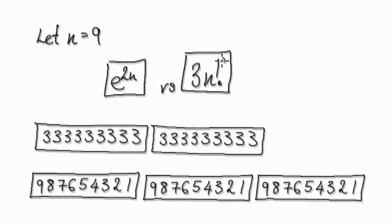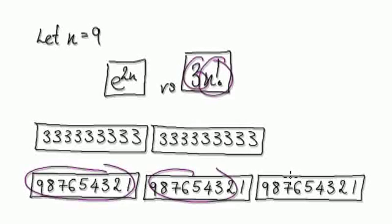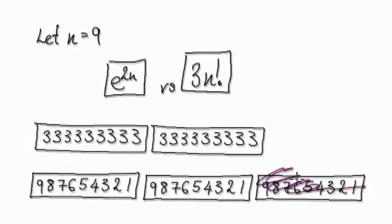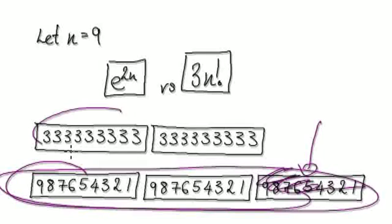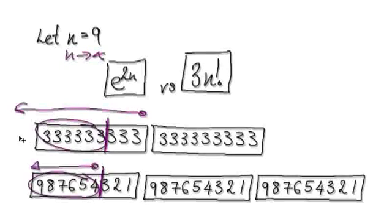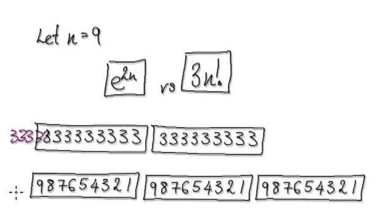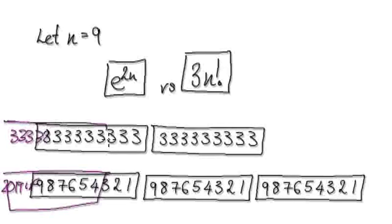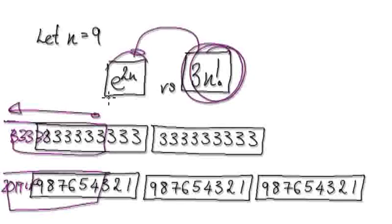Even ignoring extra factors, beyond the cutoff point everything in the factorial side will be much, much bigger than everything on the exponential side. As n tends to infinity, the factorial block grows like 20, 19, 18, and so on, while the exponential block stays as repeated threes. Everything beyond the cutoff in the factorial is much bigger than its counterpart on the exponential side. So as n tends to infinity, n factorial is much, much bigger than e to the power of 2n.